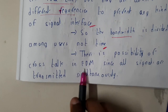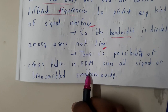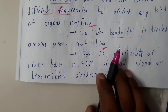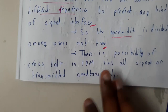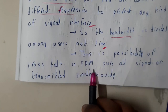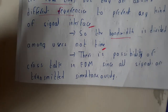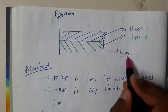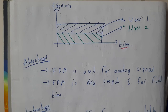There is a possibility of crosstalk in FDM. Crosstalk means whatever user 1 is doing, there may be interference with user 2. Any kind of disturbance can also be called crosstalk. Since all signals are transmitted simultaneously and travel for an extended time, there is a high chance of crosstalk issues.